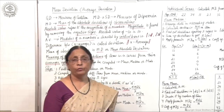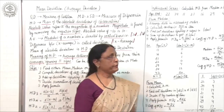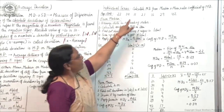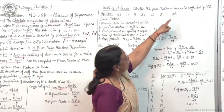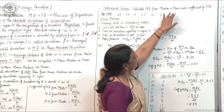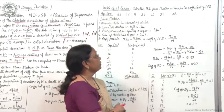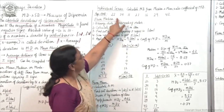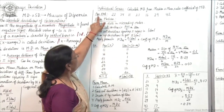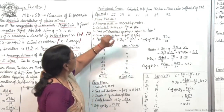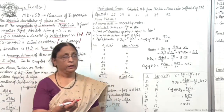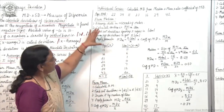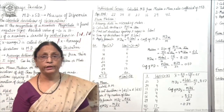Now we will see the calculation of mean deviation in three types of series. First, as usual, we will take individual series. The question says: calculate mean deviation from median and mean, and also calculate the coefficient of mean deviation. For individual series, only data is given with no frequency.